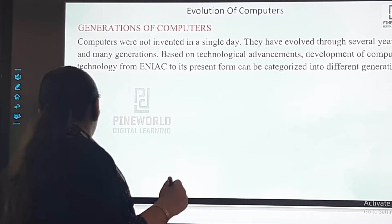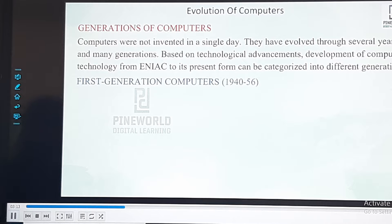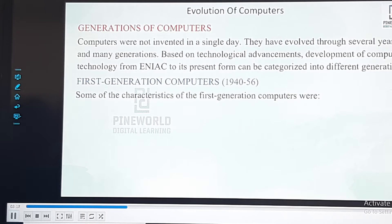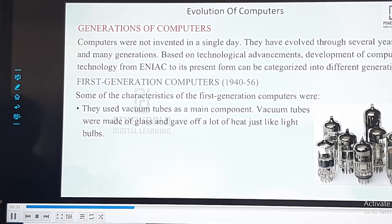First generation computers spanned from 1940 to 1956. Some of the characteristics of first generation computers were: they used vacuum tubes as the main component. Vacuum tubes were made of glass and gave off a lot of heat, just like light bulbs.